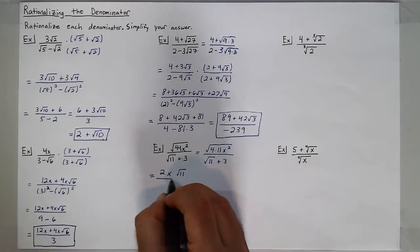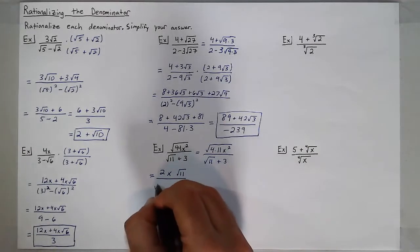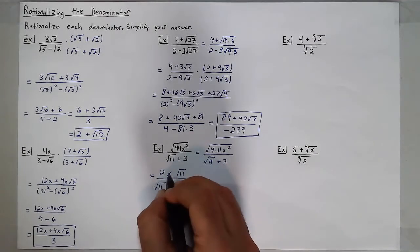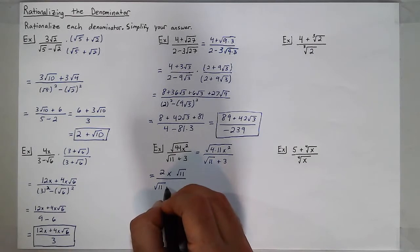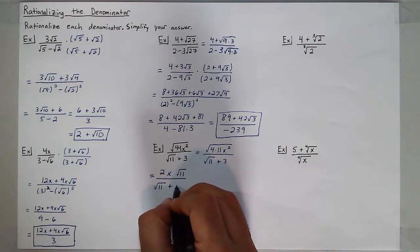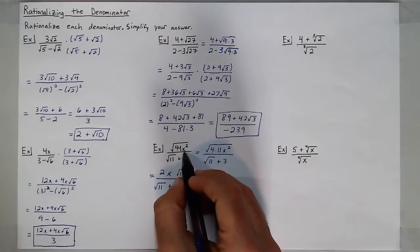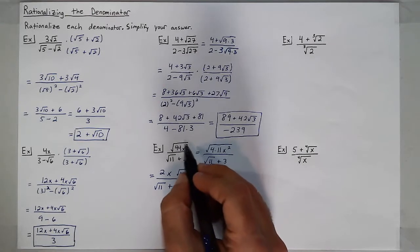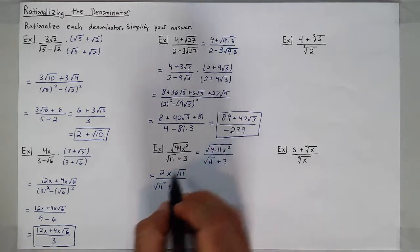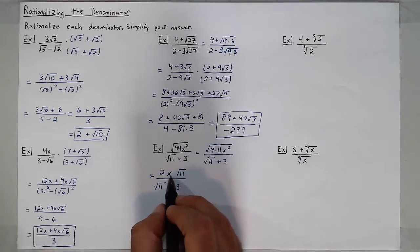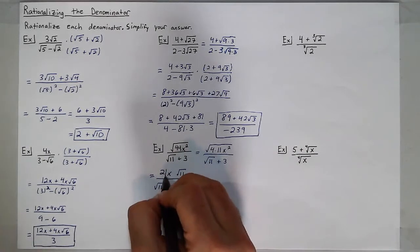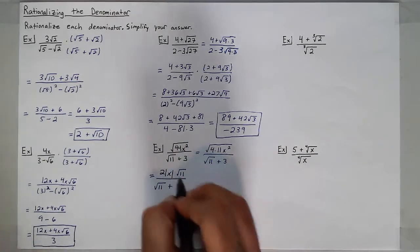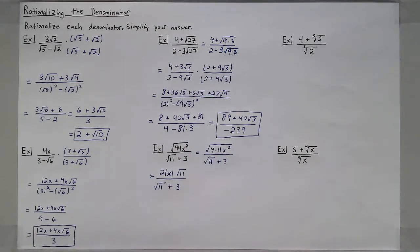One thing to be very careful about: this x that came out has the potential to be a negative number. But I know that on the inside of the original radical I would always get a positive number since I'm squaring x. So even though I'm taking this x out of the radical, I'm going to put absolute value bars around it to make sure there's no chance of getting a negative.